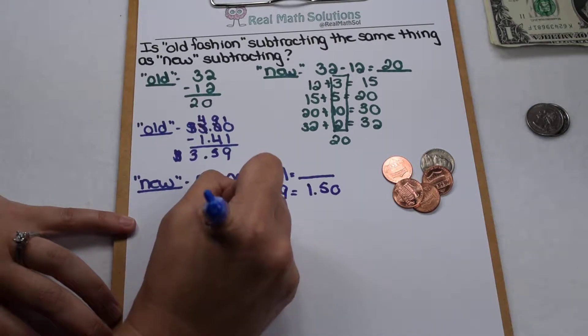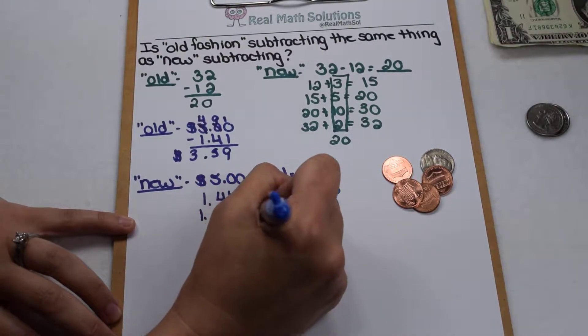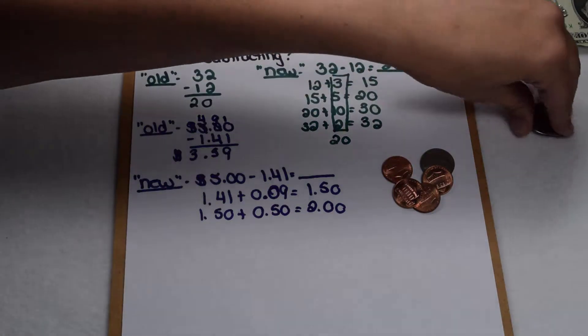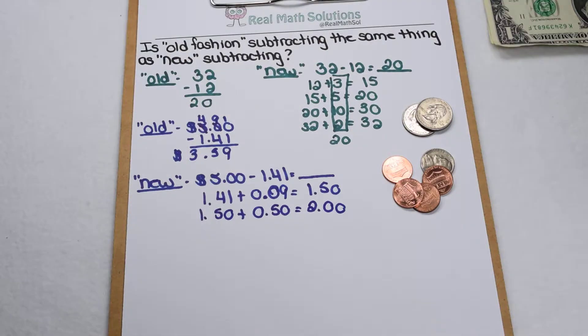Well, from $1.50, I can give them another 50 cents in change, and that'll take me up to a benchmark of $2. So 50 cents becomes part of their change.